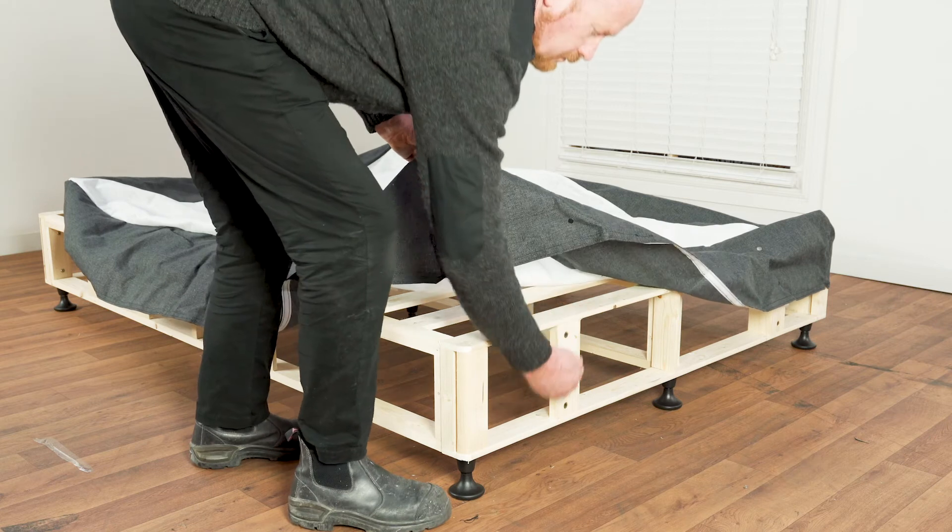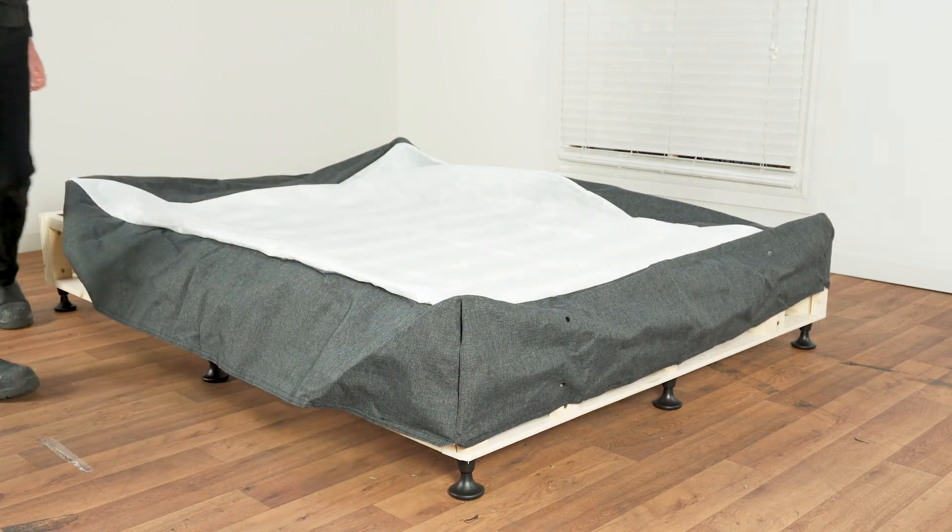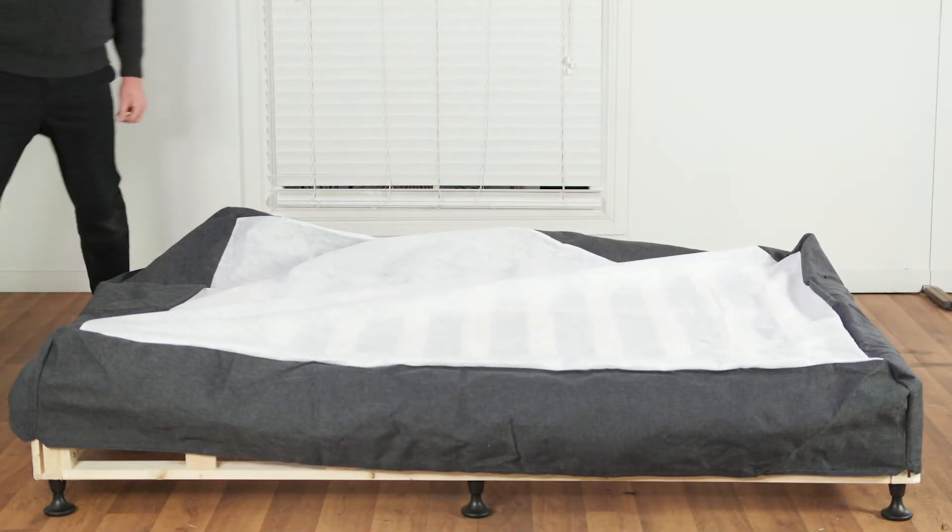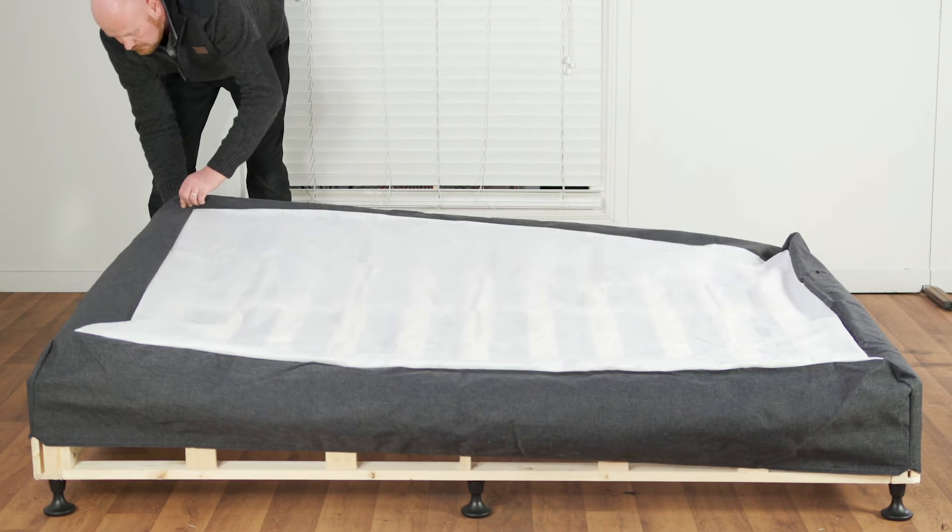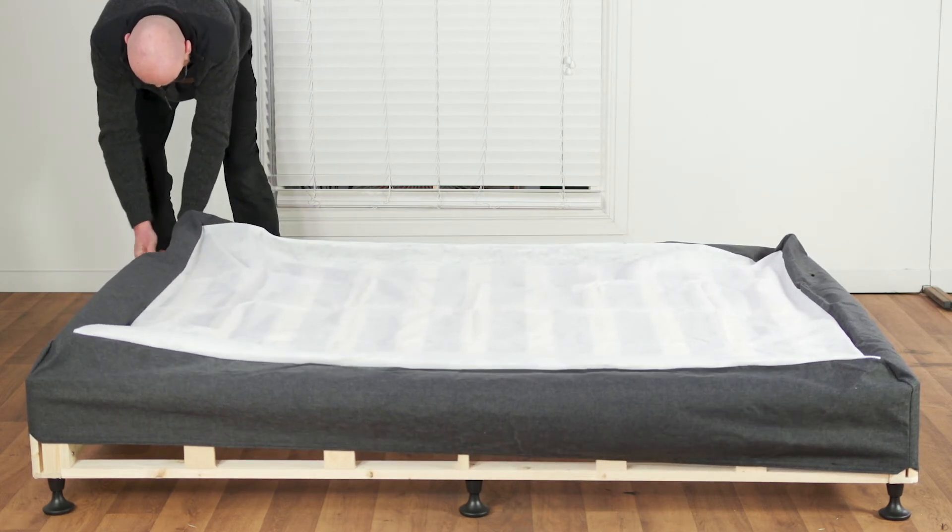Ensure that the eyelets on one of the cover ends are at the same end of the bed that the bolt holes for the headboard screws are. Place three of the four corners halfway over the rounded corners of the frame. Now gently pull the cover so that the last corner comes over the frame.